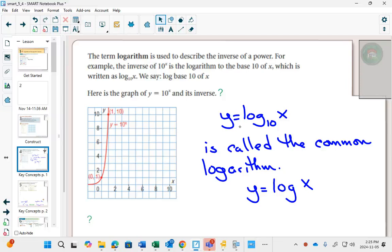If you took the graph of 10 to the x, which is an exponential graph with an asymptote at y equals 0, and you switch the x and the y values, what would happen to the point (0, 1)? It would change to (1, 0). What would happen to (1, 10)? It would change to (10, 1).